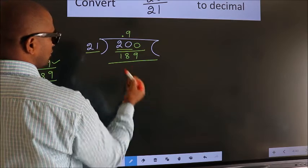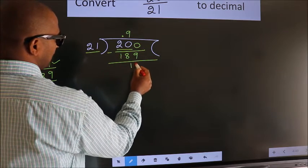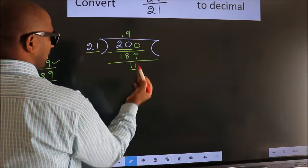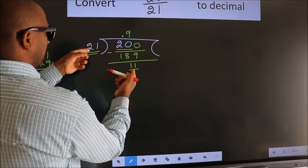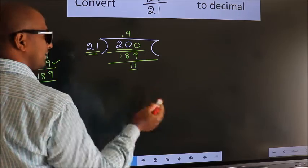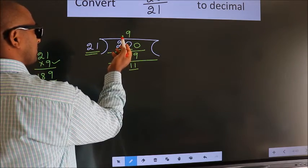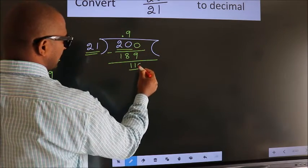Now we should subtract. We get 11. Here we have 11. Here 21. 11 smaller than 21. And we already have the decimal. So we can directly take 0.